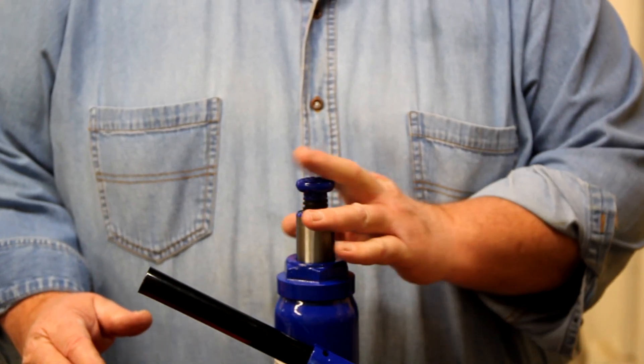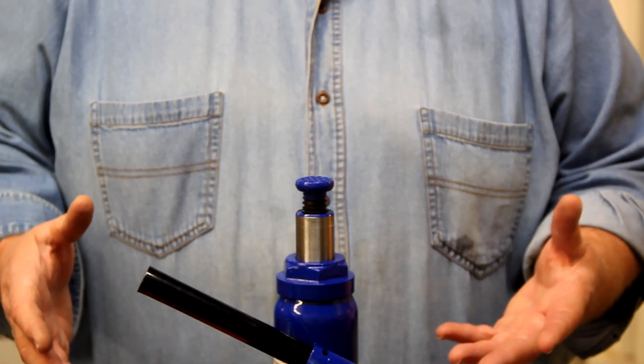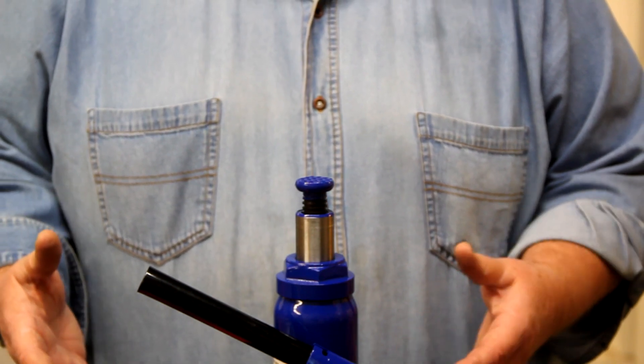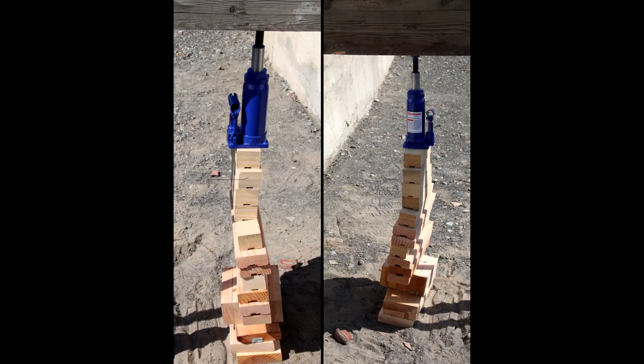Now, let's talk about the business end of the jack where we're lifting. Lots of times the jack by itself doesn't reach the load that you're trying to pick up. So, we typically have to go under the jack to put blocks or stones or some other kind of precarious thing to raise the jack up to the level of the work.